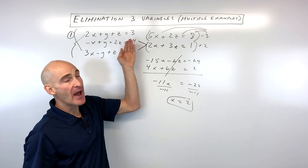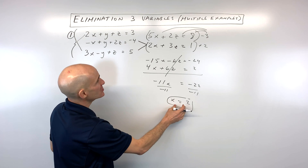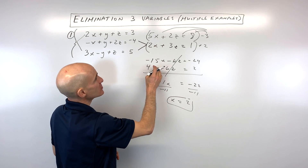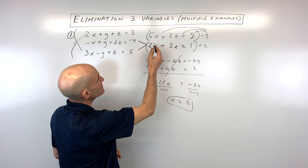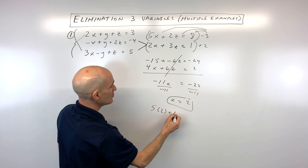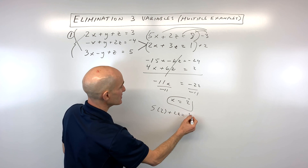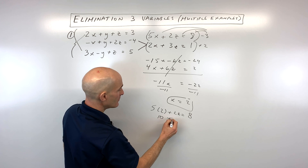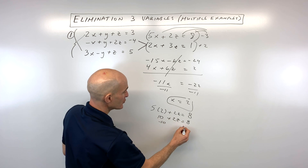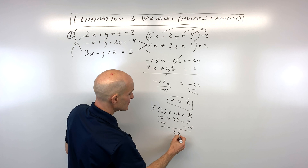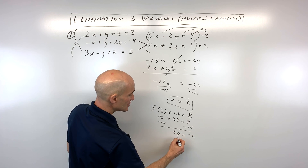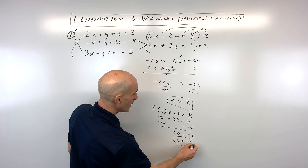Now we're going to work our way back. We take x equals 2 and put it into one of the two-variable equations — I'll use the top one: 5 times 2 plus 2z equals 8, which gives us 10 plus 2z equals 8. Subtract 10 from both sides to get 2z equals negative 2. Divide by 2, so z equals negative 1.